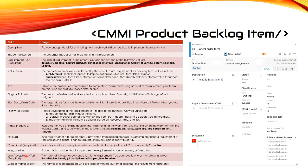User Acceptance Test is a required field representing the status of the user acceptance test for a requirement. You can specify one of the following values: Pass, Fail, Not Ready (which is default), Ready, Skipped, or Info Received. Subject Matter Experts holds the names of team members who are familiar with the customer area that this requirement represents.